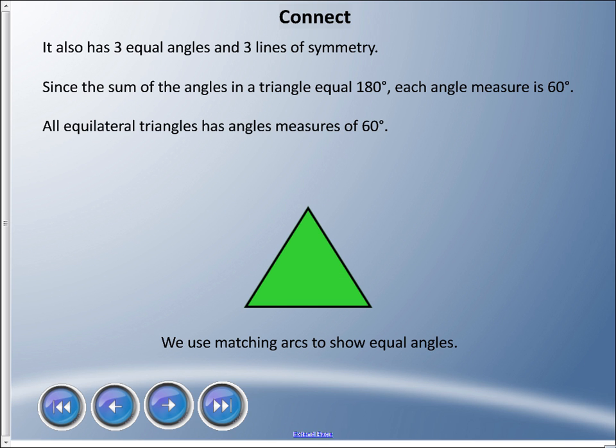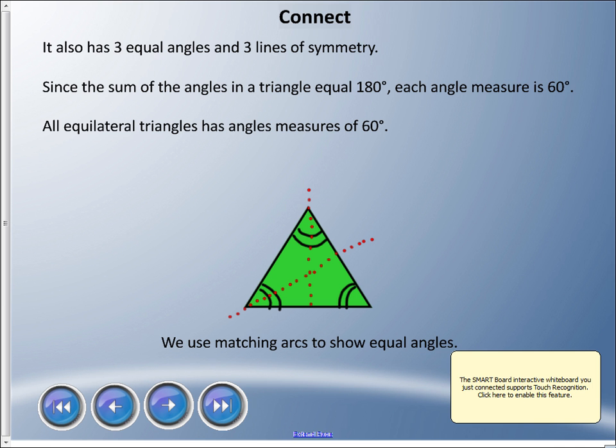Equilateral triangles also have three equal angles and three lines of symmetry. Since the sum of the angles in a triangle equals 180 degrees, and if I divide that by three angles, I get 60 degrees in each angle. So equilateral triangles all have 60 degree angles. We use matching arcs to show equal angles. Lines of symmetry—I can draw a line straight down here, or this way, or this way, and have the same image on both sides.